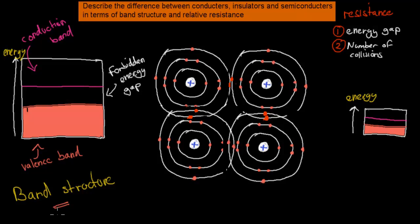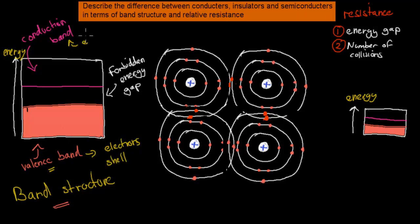A band structure shows you what kind of energy levels different types of electrons have. In a band structure you include your valence band — which contains all the electrons originally in your valence shell — your conduction band, containing electrons in the conduction shell, and the forbidden energy gap. That's the energy gap electrons have to overcome to get from the valence band into the conduction band — the amount of energy required to make that jump.